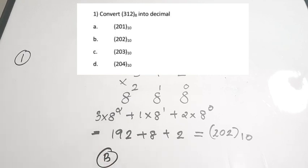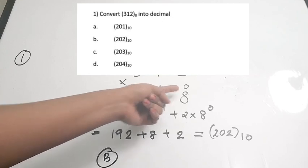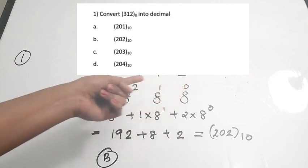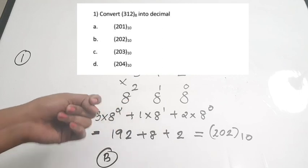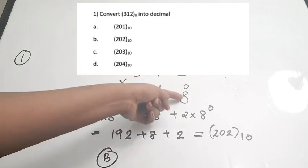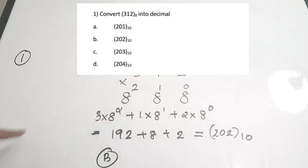To summarize: write down the octal number, write position values starting from 0, 1, 2, take them as powers of 8, multiply each digit by its corresponding power, then add the results. The correct answer is option B.